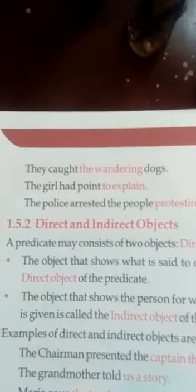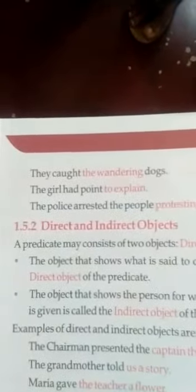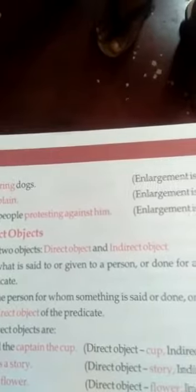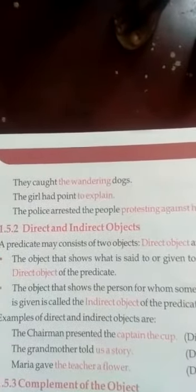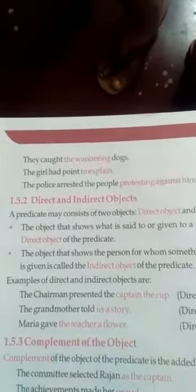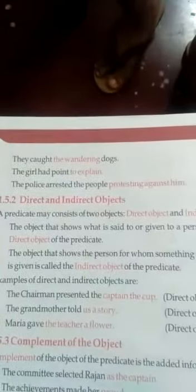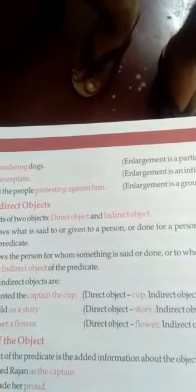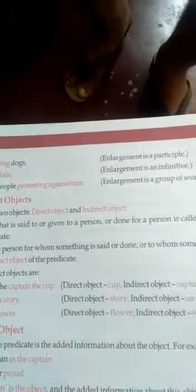Now, next come to the direct and indirect objects. A predicate may consist of two objects: direct object and indirect object. The object that shows what is said to, given to, or done for a person is called the direct object of the predicate. The object that shows the person for whom something is said or done, or to whom something is given, is called the indirect object of the predicate. Examples: 'The chairman presented the captain the cup' — direct object is cup, indirect object is captain. 'The grandmother told us a story' — direct object is story, indirect object is us. 'Maria gave the teacher a flower' — direct object is flower, indirect object is teacher.